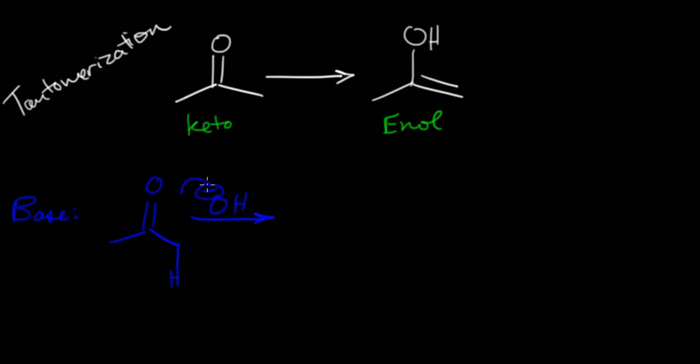And so our hydroxide is going to lend its electrons to pull off that proton, which are going to flop the previous sigma bond electrons down to create a pi bond, which is also going to break the carbonyl's pi bond, just like I've shown.